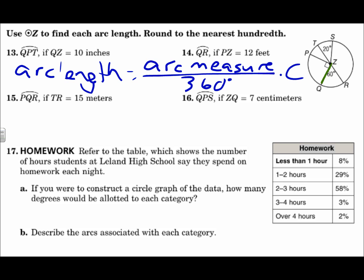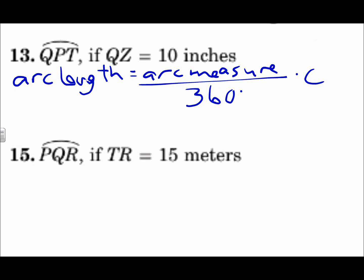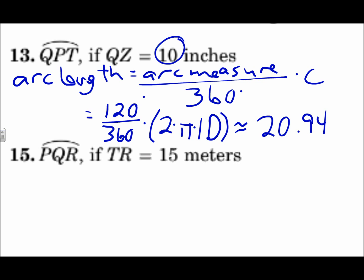Remember, on this one, the arc measure is 120, and the circumference uses the radius of 10 inches. Okay, so I'll use this formula. The arc measure we found is 120. Circumference is 2 pi R. 2 pi and the radius they give you is 10. So, 120 over 360 times 2 times pi times 10 to the nearest hundredth is 20.94 inches.